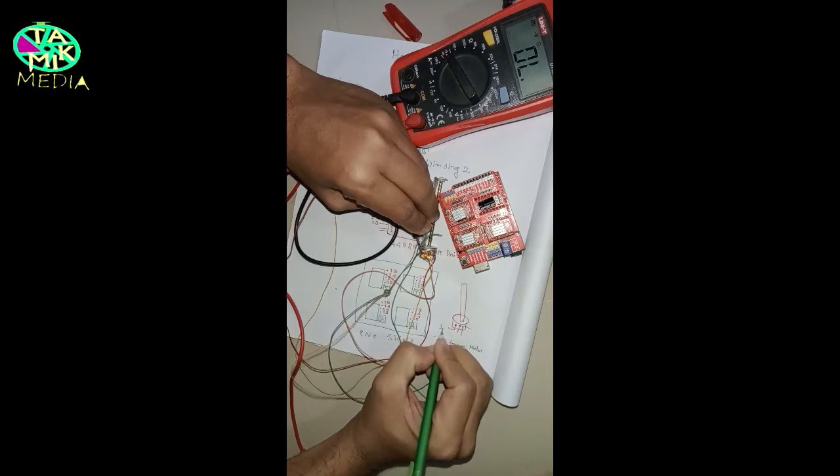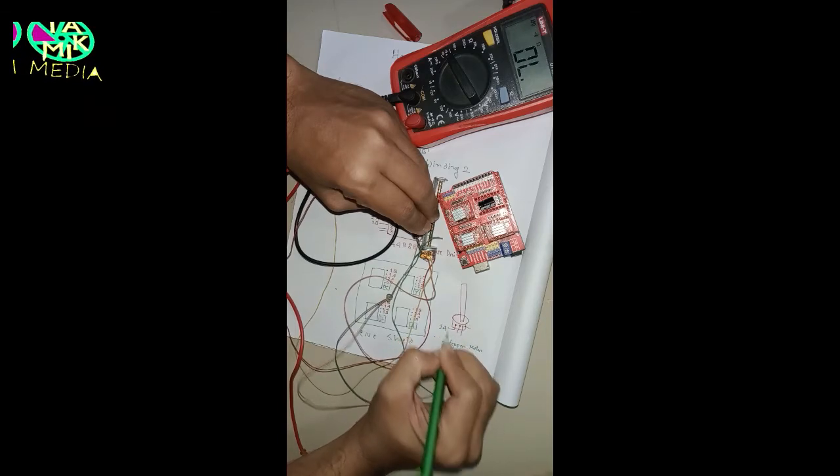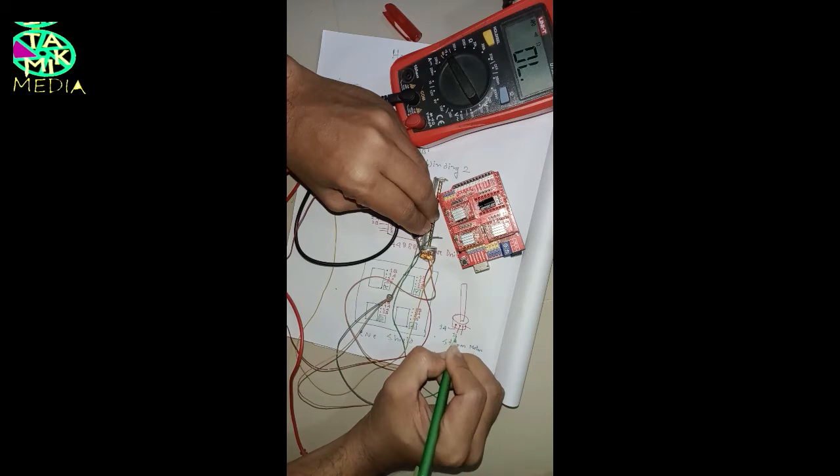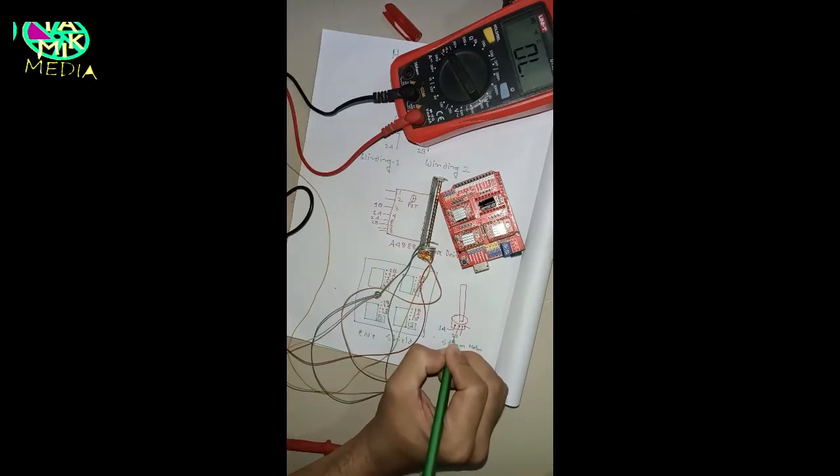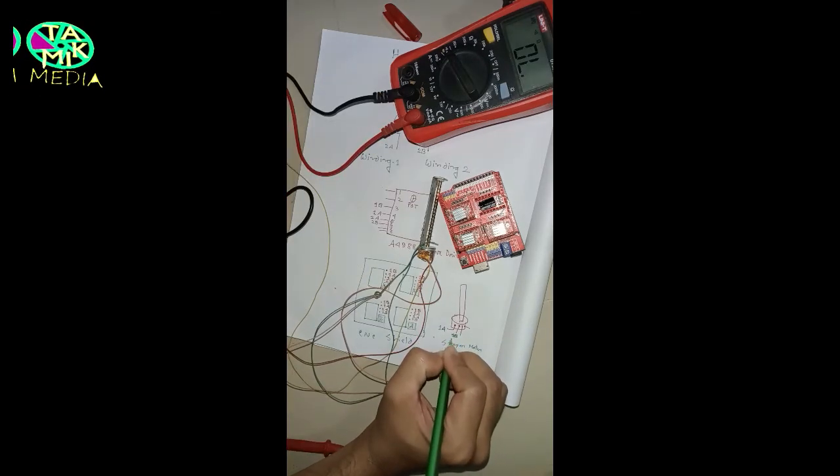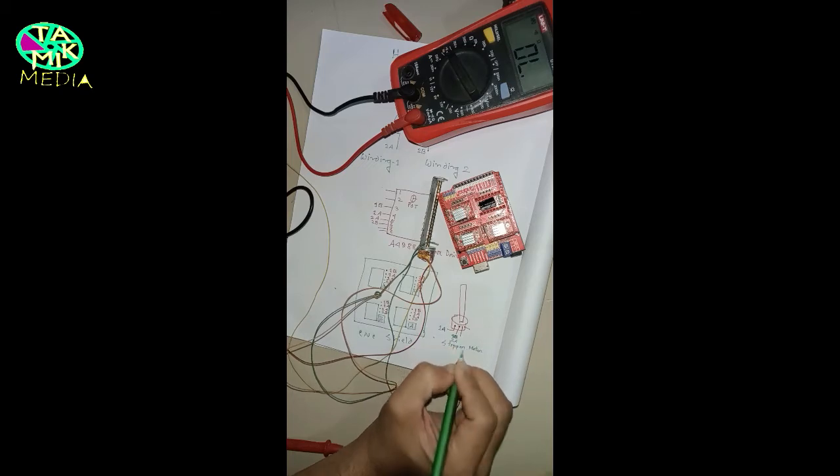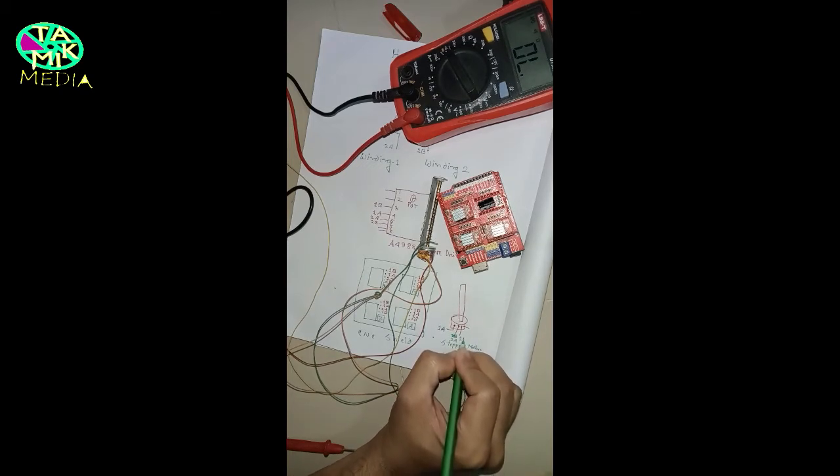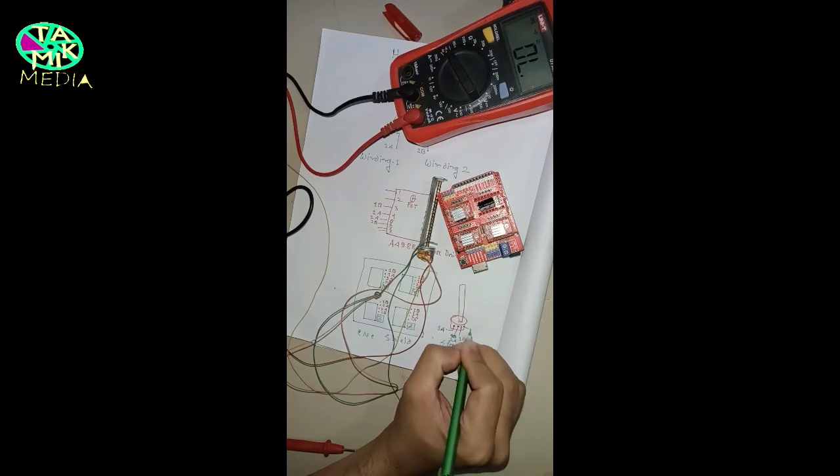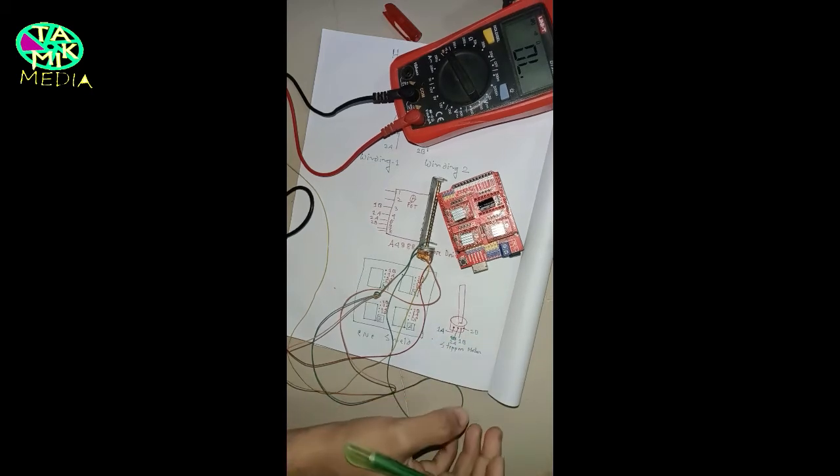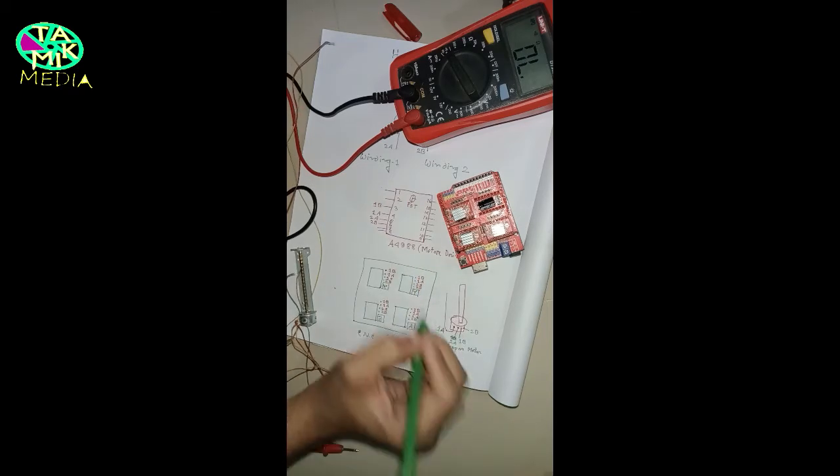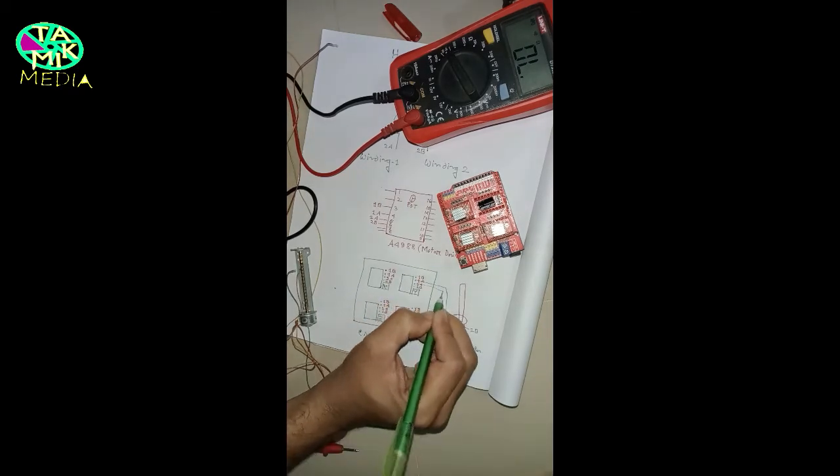This is winding one: 1A, 2B. I'm sorry, this should be 2A. Same way, this is winding two: 1B, 2B. Connection should be like this.